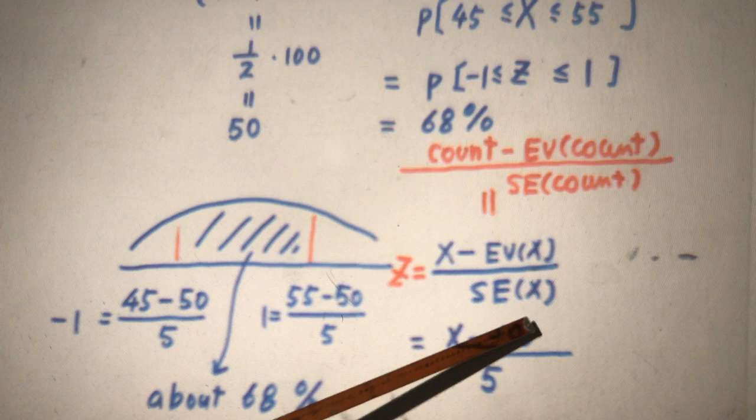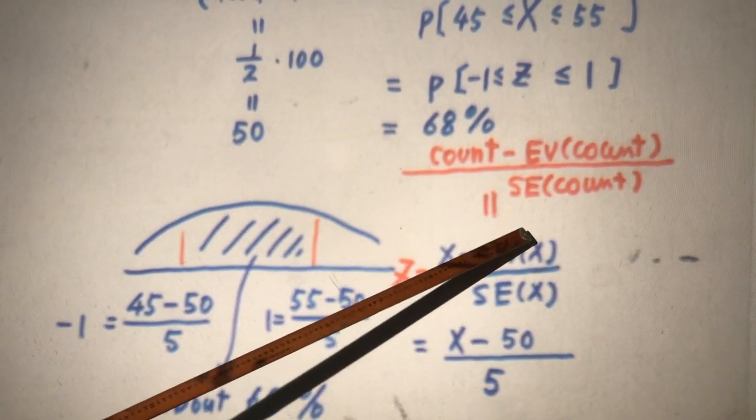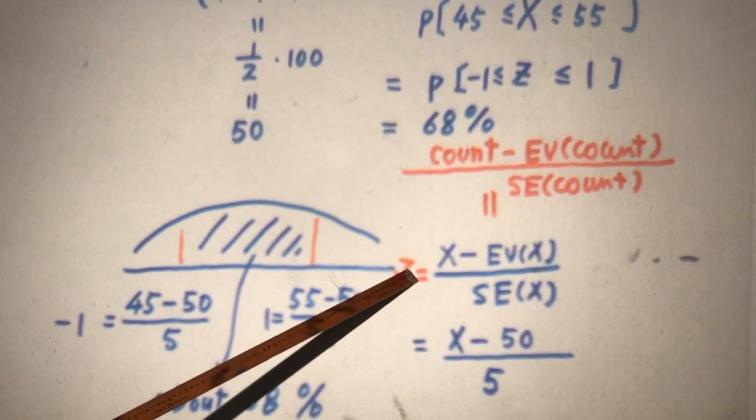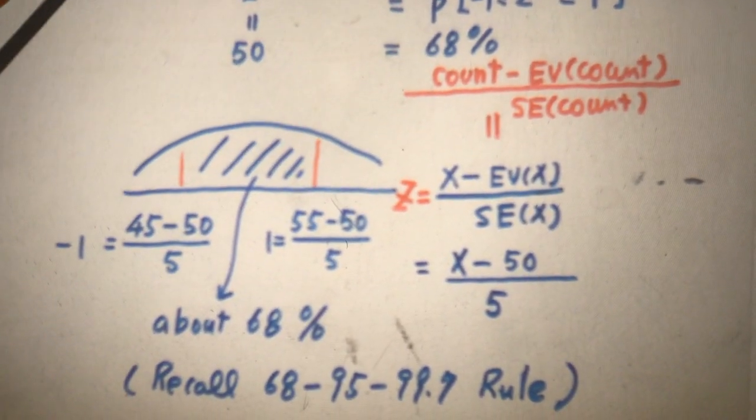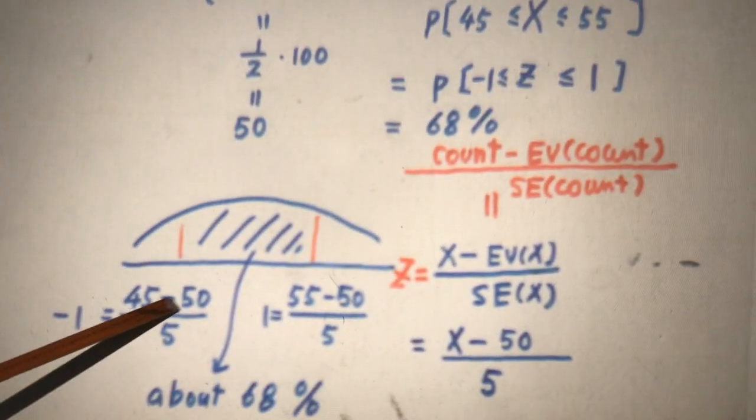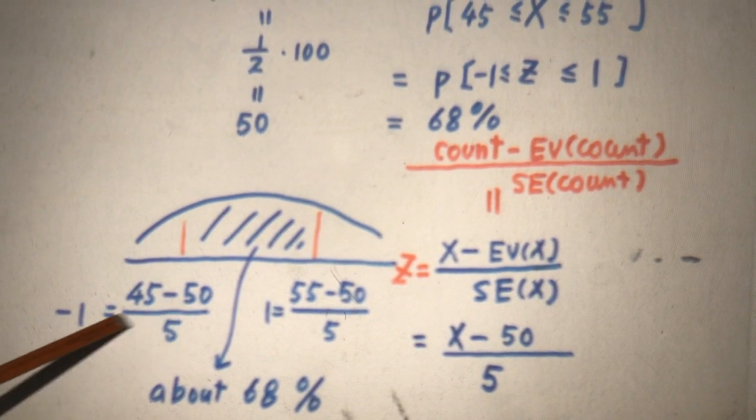So after I standardize it, X subtract by its mean divided by standard deviation, we convert to z score. That means standard normal. Well, 45, you subtract by 50, divided by 5, that's minus 1.